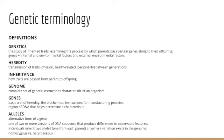Heredity is the sum of all biological processes by which particular characteristics — physical characteristics, health characteristics, sometimes even personality — are transmitted from parent to offspring. Inheritance is how our traits or characteristics are passed from parent to offspring — we typically call this the mode of inheritance. We'll spend time this term talking about different inheritance patterns: autosomal recessive, autosomal dominant, mitochondrial inheritance, and sex-linked inheritance, among other potential concepts.